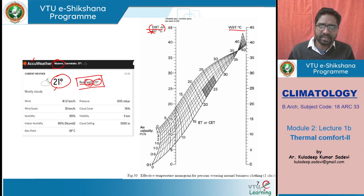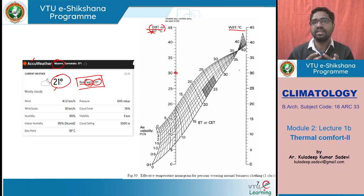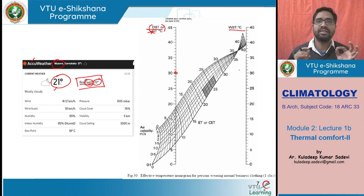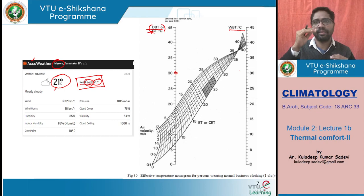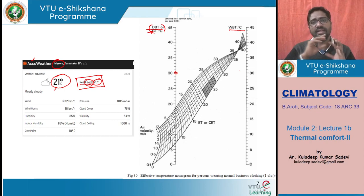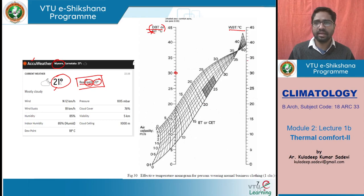If the dry bulb reading is 30 degrees centigrade, and — as we discussed in our last lecture — when the relative humidity is 100%, your dry bulb and wet bulb temperatures are same. In general, when humidity is not that high, your wet bulb temperature is comparably lower than the dry bulb temperature. So even if dry bulb temperature is higher and wet bulb temperature is lower, there is certain humidity less than saturation. For example, in this case, let us say the wet bulb temperature is 25 degrees centigrade.